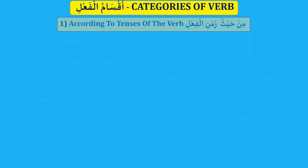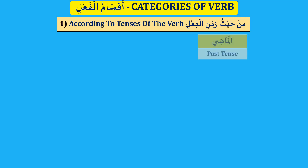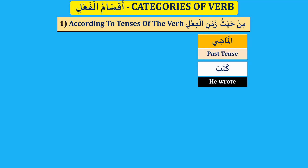The first category will be Min haythu zaman al-Fi'l, according to tenses of the verb. We already learned this rule in our previous lessons. Al-Madi, past tense — example: katabah, he wrote.